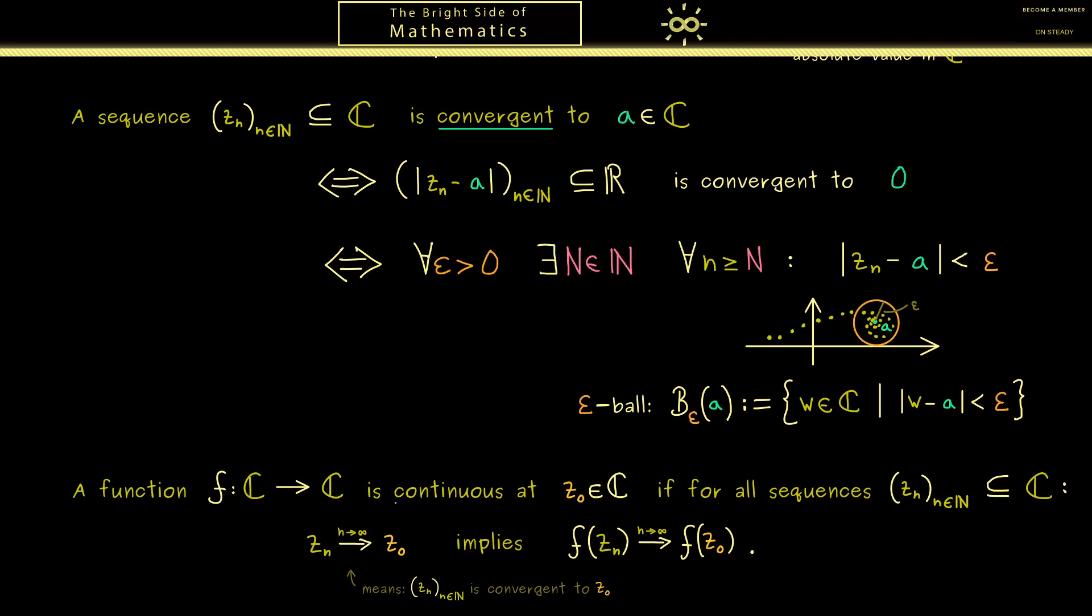So with this we have the definition of continuity for complex functions. Therefore the next thing we need to define is the important notion of differentiability. This is what we will do in the next video where we actually start with complex analysis.